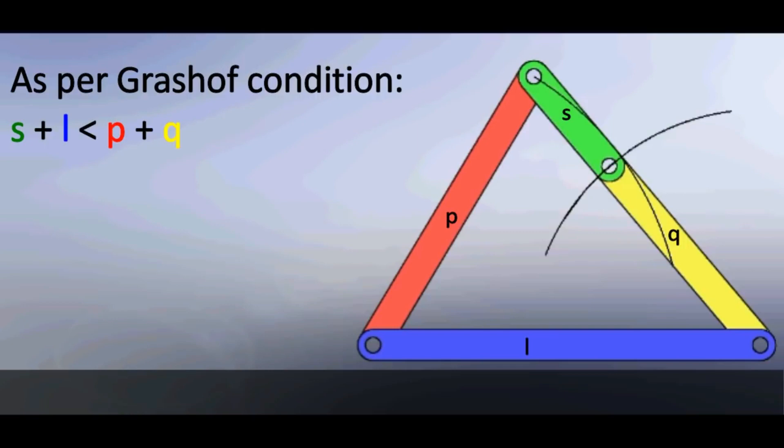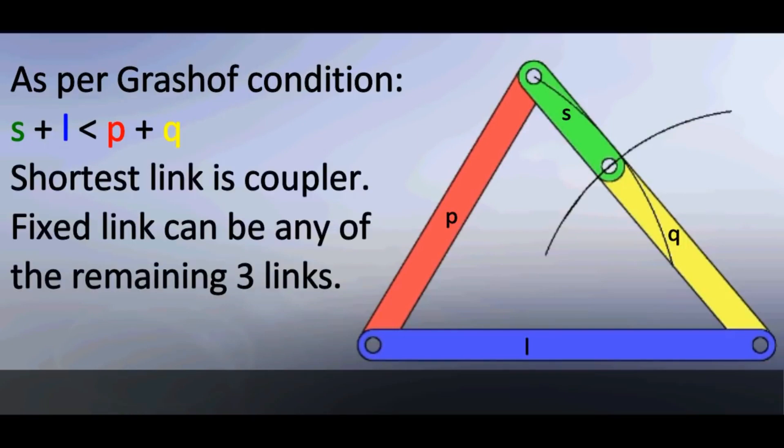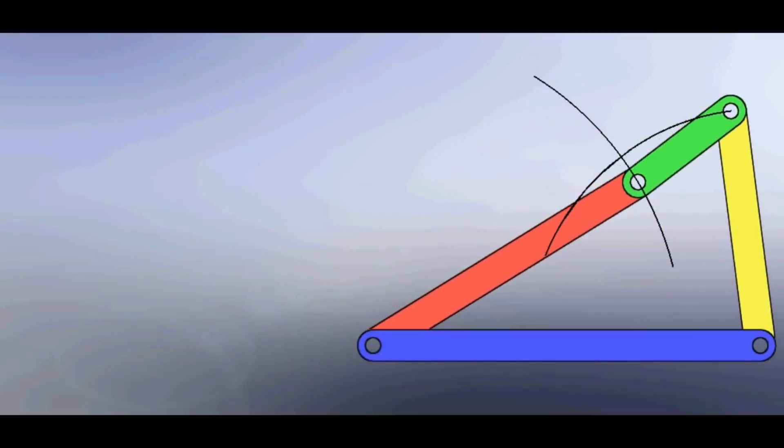In this case, s plus l is less than p plus q. For double rocker configuration, shortest link is the coupler and fixed link can be any of the three remaining links. As you can see, the coupler is